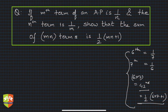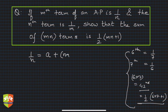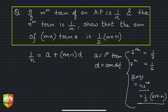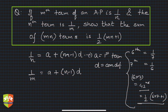Now, how to go about it — direct application of formula is required. The mth term of an AP is 1/n, so: 1/n = a + (m − 1)d, where a is the first term and d is the common difference. This is equation 1. Similarly, 1/m = a + (n − 1)d. This is equation 2.